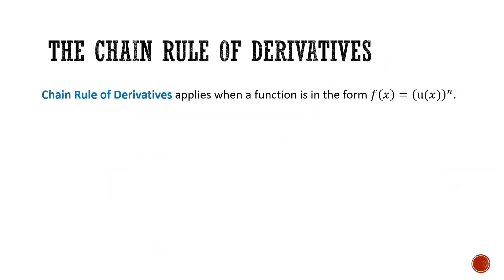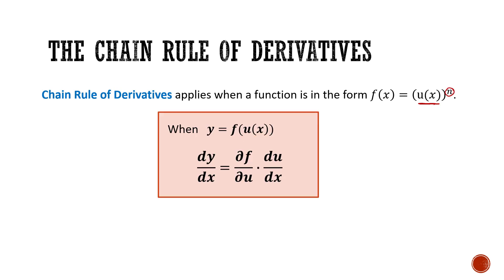To summarize: the chain rule applies when we have a function in the form of f(x) being some intermediate function of x — in the previous case, x plus 3 — all raised to an exponent n. We do this derivative by substituting u for that function of x, doing the derivative of the outer function with respect to u, then multiplying by the derivative of what u equals with respect to x. Let's try this again to solidify the concept.